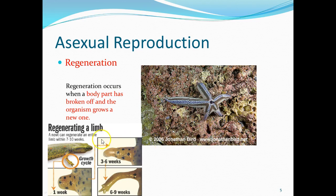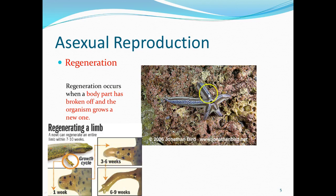You can also see this in an organism called a newt, where the arm was cut off and it eventually regenerates the arm. But in some cases, we're actually recreating a whole second organism from one part of the organism.